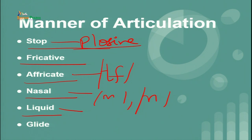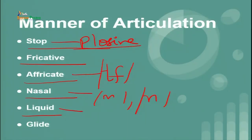In liquid sounds, the articulatory organs try to come into contact with each other and a meeting takes place, but the air is not obstructed at all; rather it is released through its way. Examples are 'la' and 'ra.' The manner and place of articulation are distinctive and important to learn different types of sounds when it comes to the International Phonetic Association.